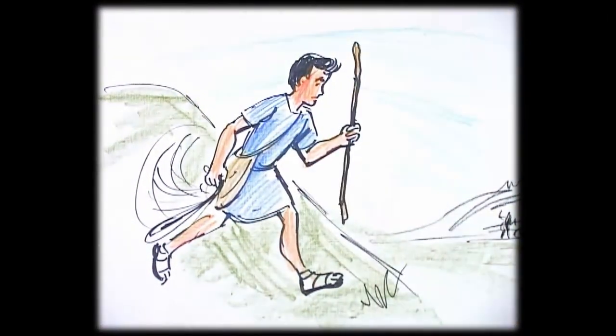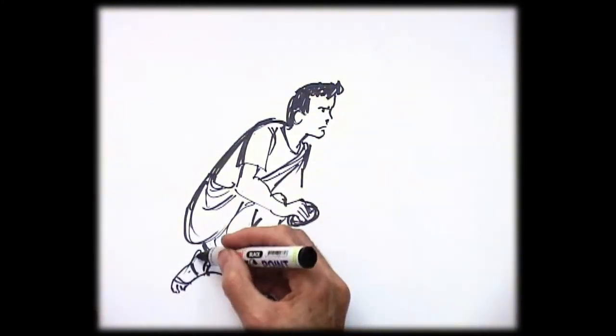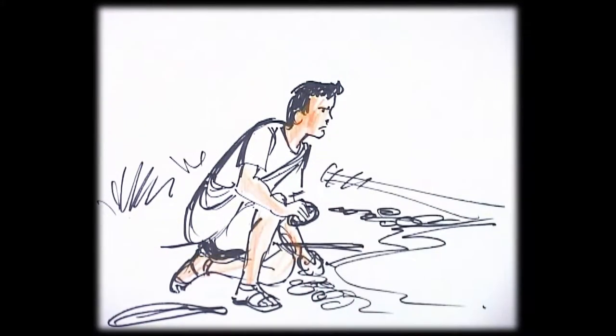He went out to a stream and picked up five smooth rocks and put them in his leather bag. Then, with his sling in his hand, he went straight towards Goliath.